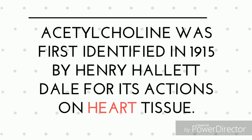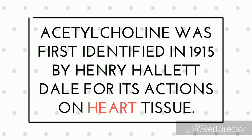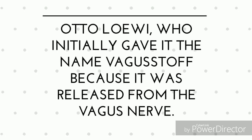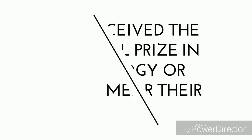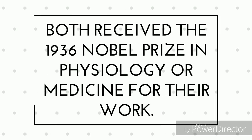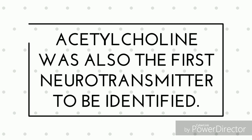Acetylcholine was first identified in 1915 by Henry Hallett Dale for its actions on heart tissue. It was confirmed as a neurotransmitter by Otto Loewi, who initially gave it the name vagus-stoff because it was released from the vagus nerve. Both received the 1936 Nobel Prize in Physiology or Medicine for their work. Acetylcholine was also the first neurotransmitter to be identified.